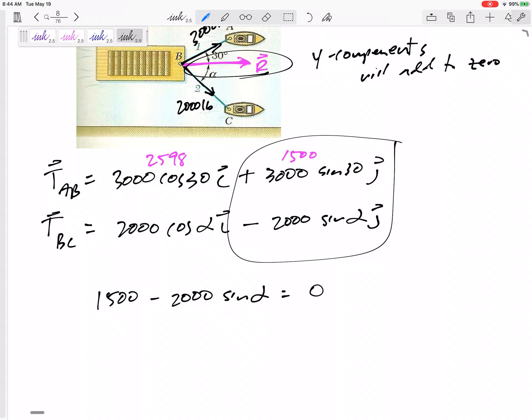The 1,500 and the negative 2,000 sine alpha should add to zero. That equation lets me solve for alpha. Maybe bring this to the other side of the equation. Divide by 2,000, inverse sine, alpha, 48.6 degrees. There we go. That's the answer to my question.